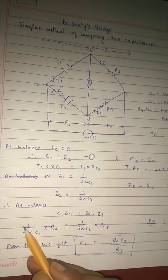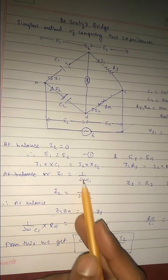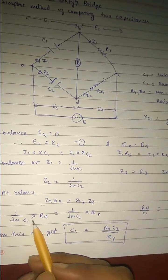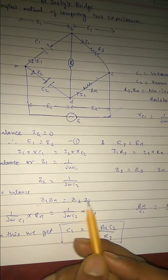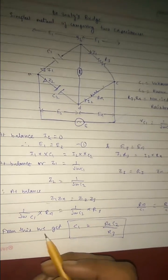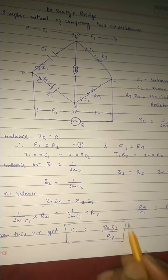So we will simply equate this. Z1 is 1 by jωC1 and Z4 is R4, so this equals to Z2 into Z3, 1 by jωC2 into R3. We equate this and get C1.